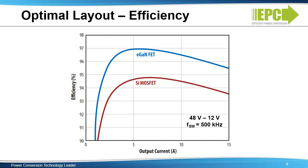Converter systems with EGAN FETs inherently outperform comparable silicon-based designs, and optimal layout techniques further enhance these benefits. This curve demonstrates the efficiency in comparison to output current, showing the EGAN advantage in a 48 volt to 12 volt buck converter operating at 500 kilohertz. These efficiency curves compare the EPC2045 100 volt EGAN FET against a comparable 100 volt silicon MOSFET in a QFN package.